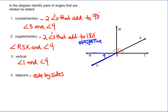They have this side right here in common with this angle, angle 2 or angle RSW. So those two angles must be adjacent angles. I would say angle 1 and angle 2 are adjacent angles.